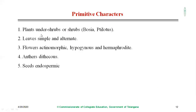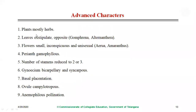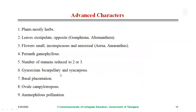Primitive characters: plants are mostly shrubs or undershrubs; leaves are simple or alternate; flowers are actinomorphic, hypogynous, and hermaphrodite (bisexual); anthers are dithecous; seeds are endospermic. Advanced characters: plants are mostly herbs; leaves are exstipulate, usually opposite in Gomphrena and Alternanthera; flowers are small, inconspicuous, and unisexual in Amaranthus; perianth is gamophyllous — usually fused; number of stamens reduced to two or three; gynoecium is bicarpellary and syncarpous with basal placentation of the campylotropous ovule.